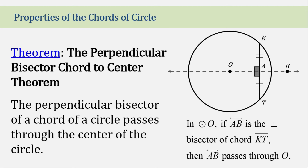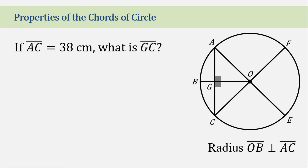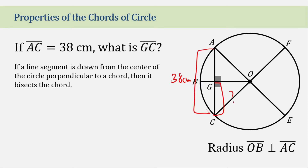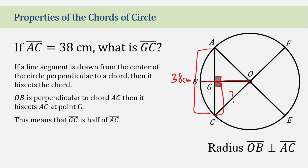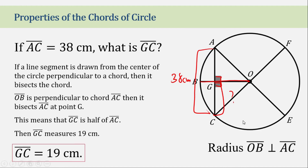Now let's apply these three theorems. In the illustration, if segment AC is equal to 38 cm, what is the measurement of GC? The symbol indicates that this line is perpendicular to the chord. Therefore, this line bisects chord AC. If that's the case, GC is half of AC, so GC is equivalent to 19 cm.